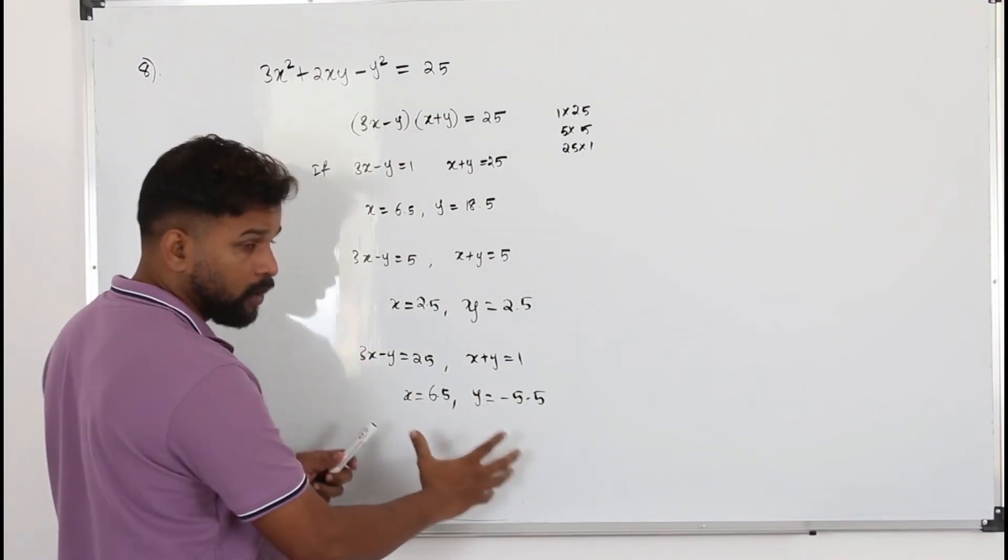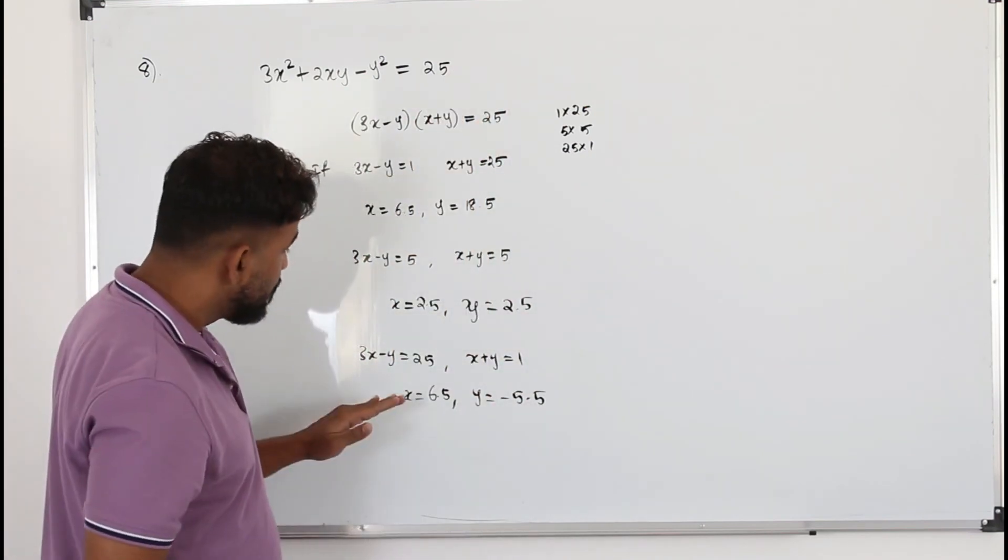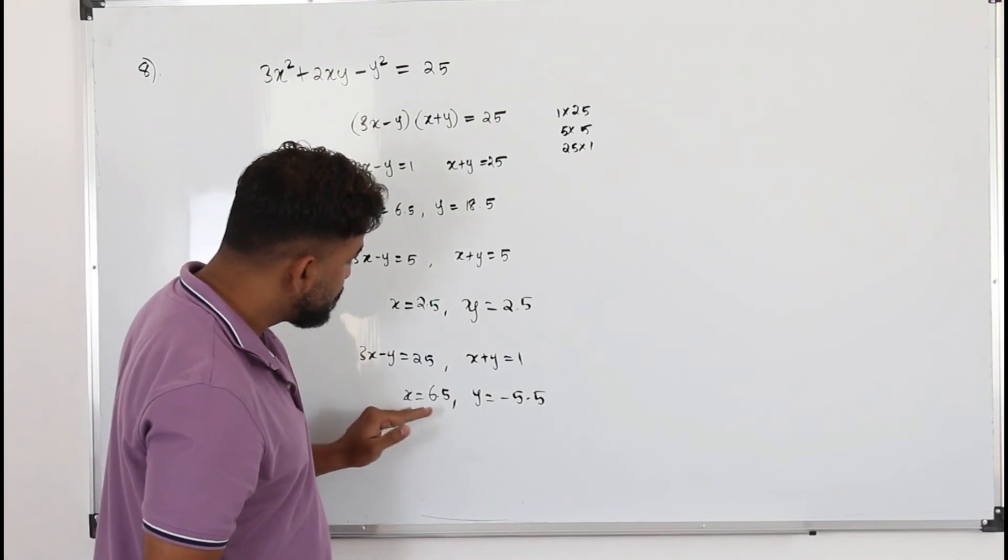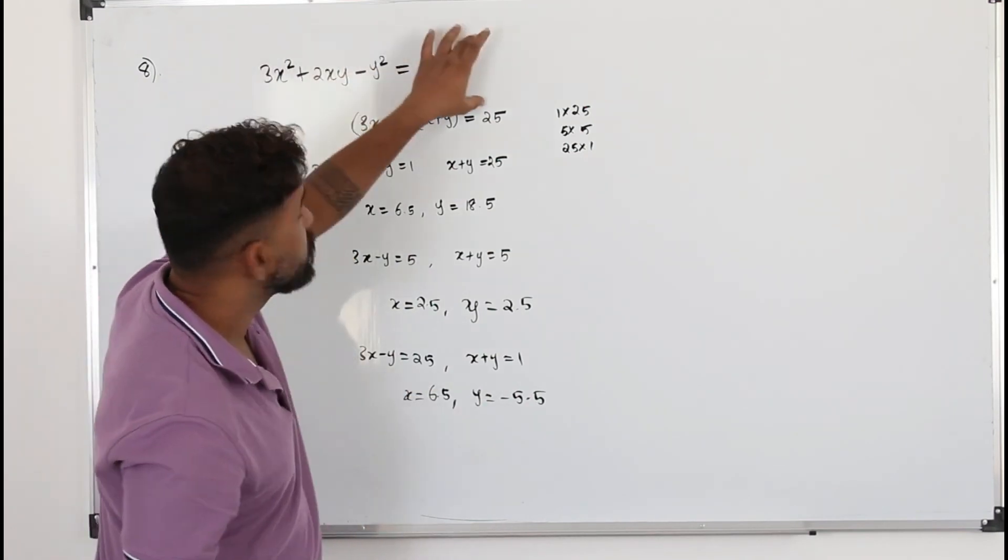So you can conclude now. You have to finish the proof by concluding this. You can write there are no integers x and y such that...